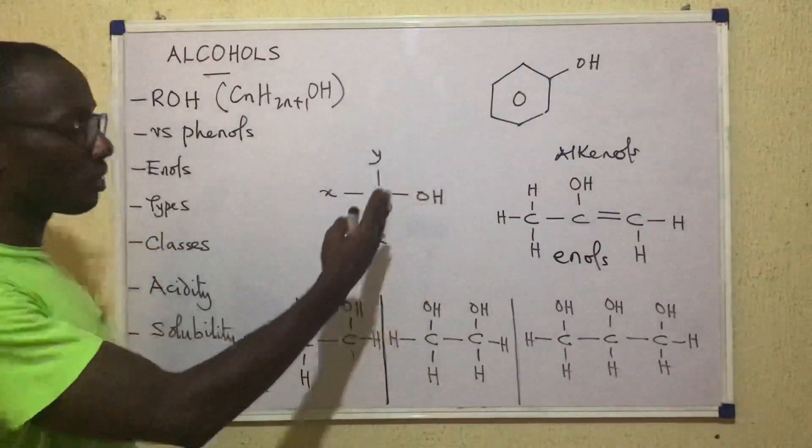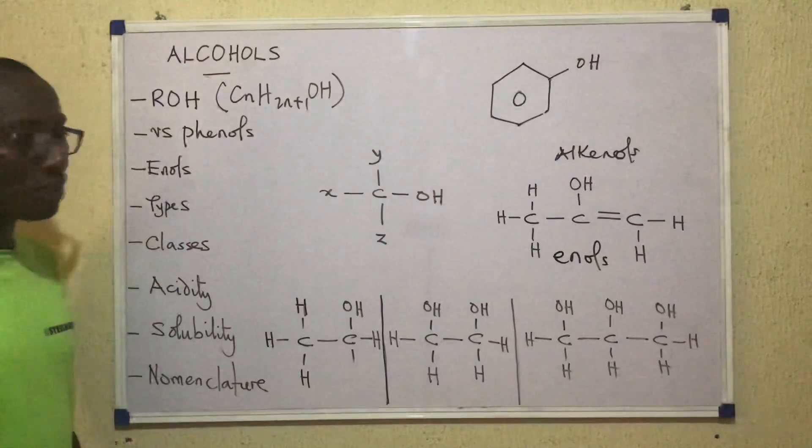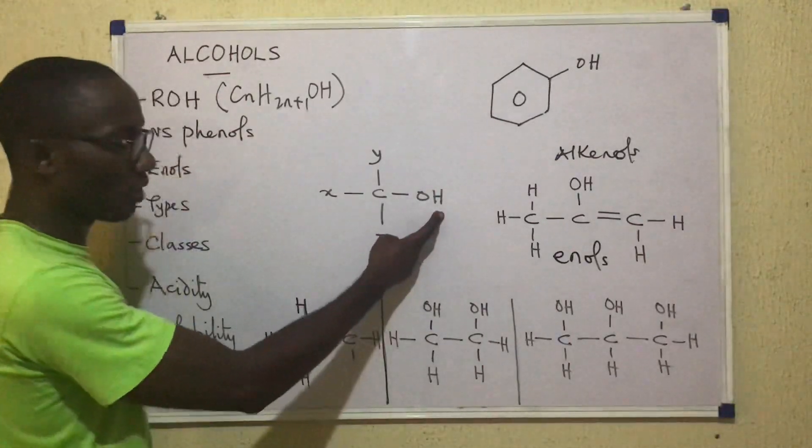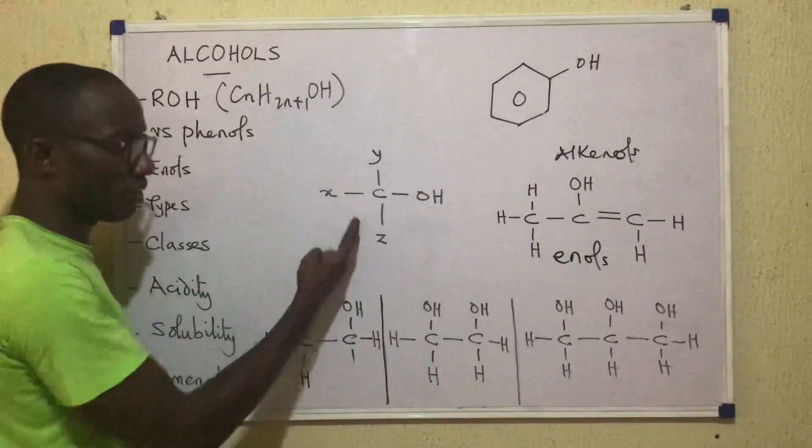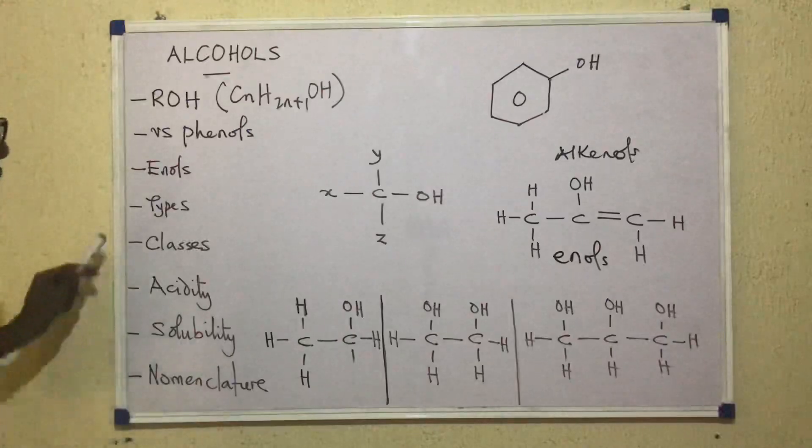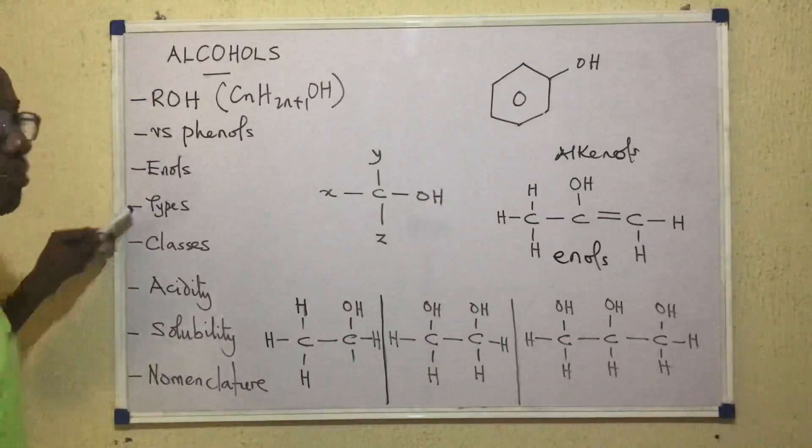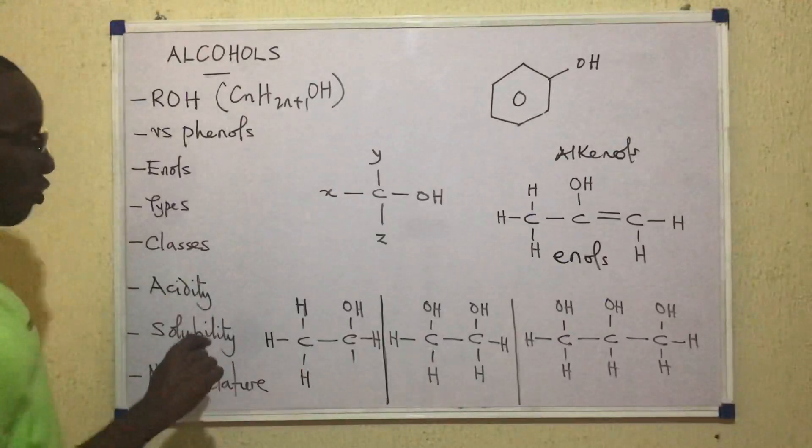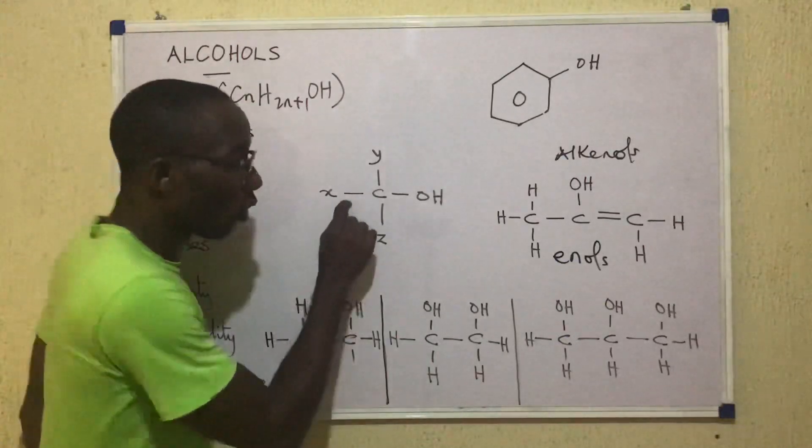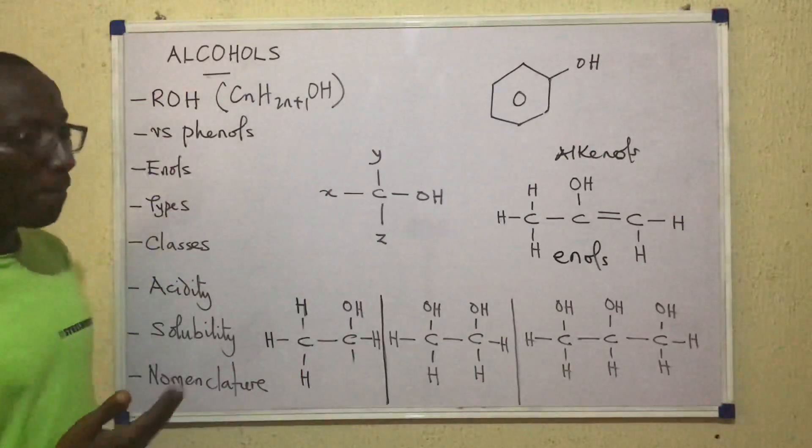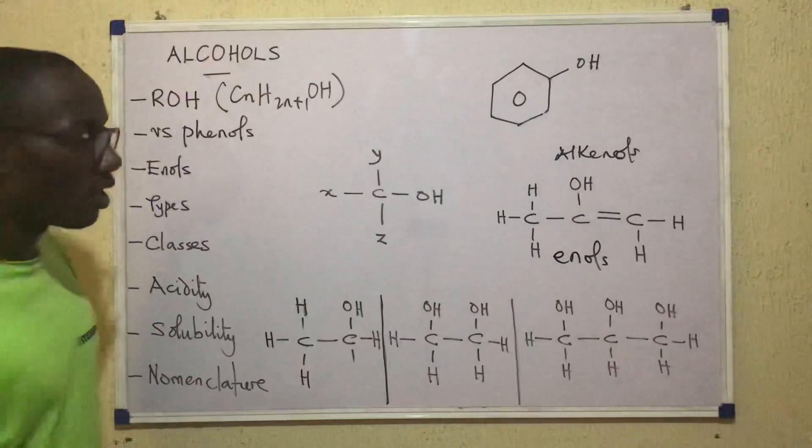Now leaving enols and phenols and coming back to alcohols, you see that the carbon bearing the OH has three other things attached to it, X, Y, Z. We'll give those meaning very soon, but for now I'd like to say that there are different types of alcohols depending on the number of OH groups that are attached or present in the alcohol.